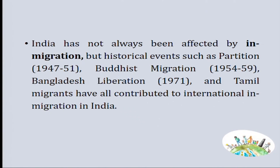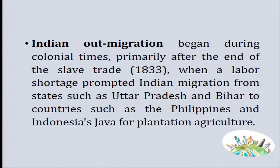India has not always been affected by in-migration. But historical events such as the partition of India between 1947 to 1951, Buddhist migration from 1954 to 1959, the Bangladesh liberation in 1971, and Tamil migrants — meaning Sri Lankan Tamils — have all contributed to international migration in India. Indian out-migration began during colonial times, primarily after the end of the slave trade, when a labor shortage prompted Indian migration from states such as Uttar Pradesh and Bihar to countries such as the Philippines and Indonesia's Java for plantation agriculture.